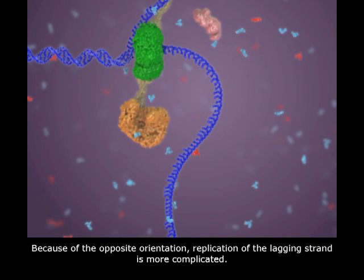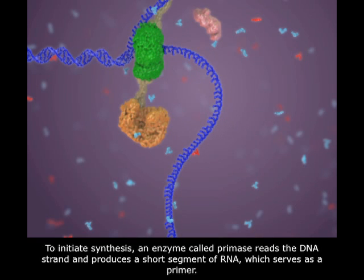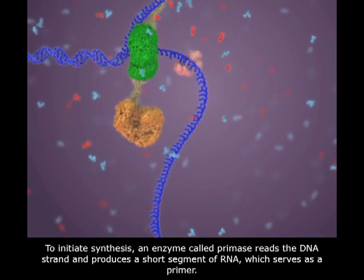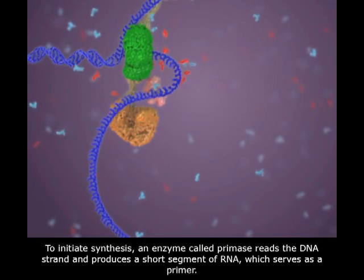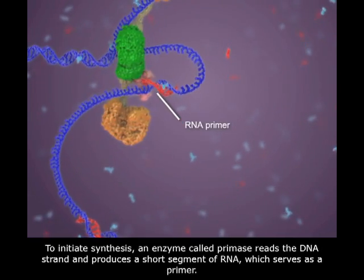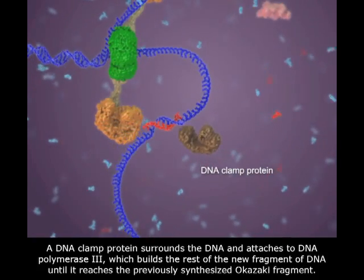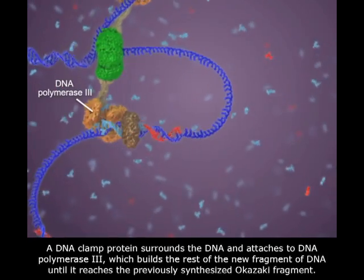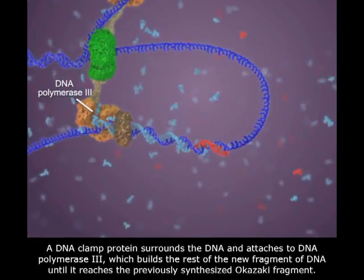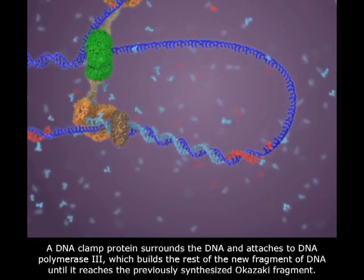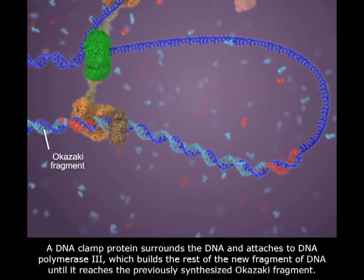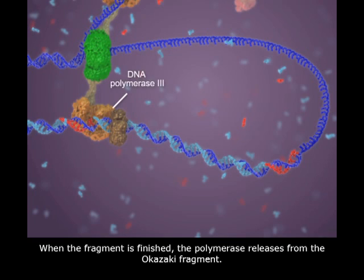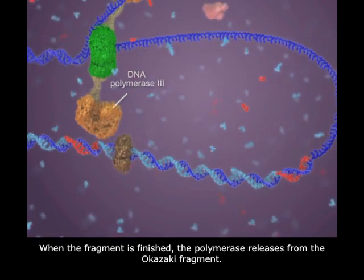Because of the opposite orientation, replication of the lagging strand is more complicated. To initiate synthesis, an enzyme called primase reads the DNA strand and produces a short segment of RNA which serves as a primer. A DNA clamp protein surrounds the DNA and attaches to DNA polymerase III, which builds the rest of the new fragment of DNA until it reaches the previously synthesized Okazaki fragment. When the fragment is finished, the polymerase releases from the Okazaki fragment.